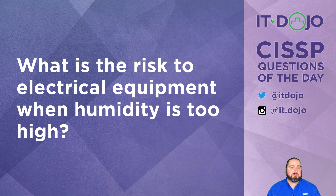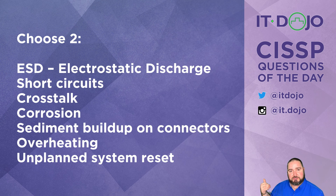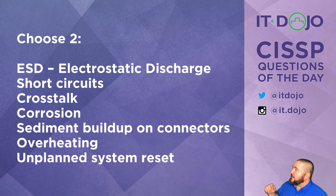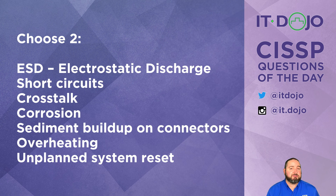Pick two answers: what are two of the risks of humidity being too high? There are your choices. Go ahead and click pause, then click play and we'll break it all down. Choice number one: ESD, electrostatic discharge. No — that is what happens when humidity is too low. We're looking for problems with humidity being too high.